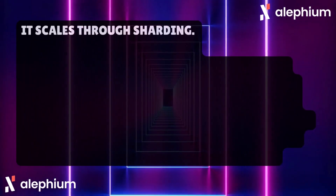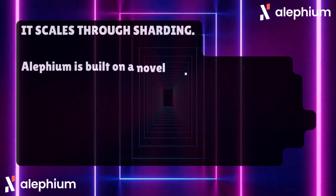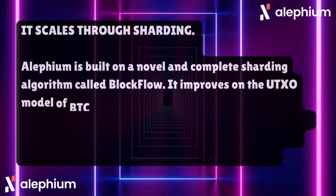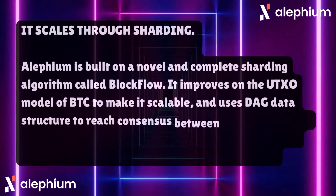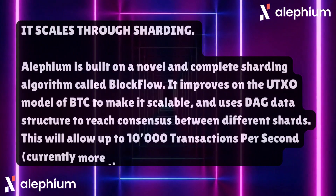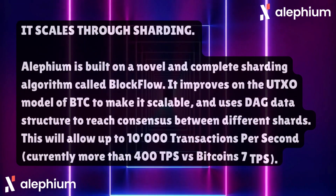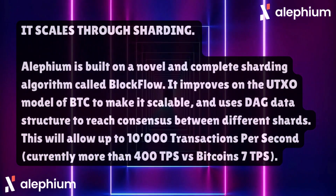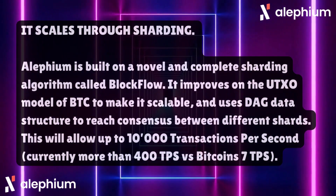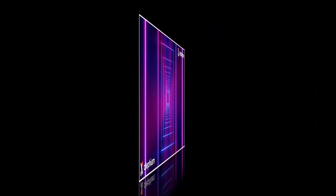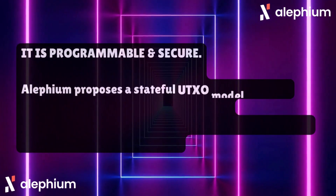It scales through Shardating. Elefium is built on a novel and complete Shardating algorithm called Blockflow. It improves on the UTXO model of Bitcoin to make it scalable, and uses a DAG data structure to reach consensus between different shards. This allows up to 10,000 transactions per second.